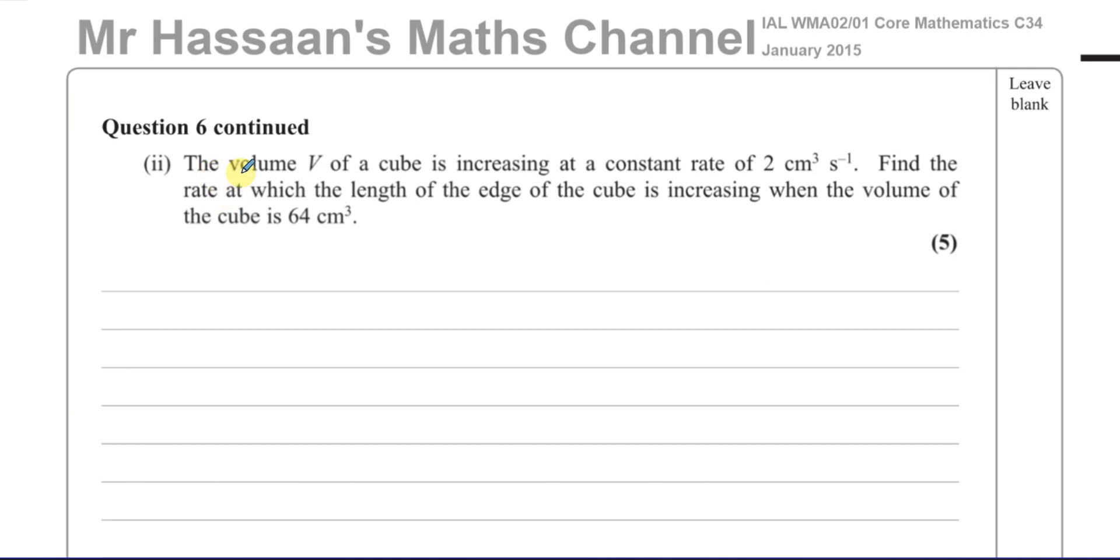This question says the volume of a cube is increasing at a constant rate of 2 cm³ per second. We've got to find the rate at which the length of the edge of the cube is increasing when the volume of the cube is 64 cm³. So first of all, we see what they gave us. They gave us the rate of change of the volume with respect to time. So what they gave us is dV/dt, the rate of change of the volume with respect to time. And that's 2 cm³ per second.